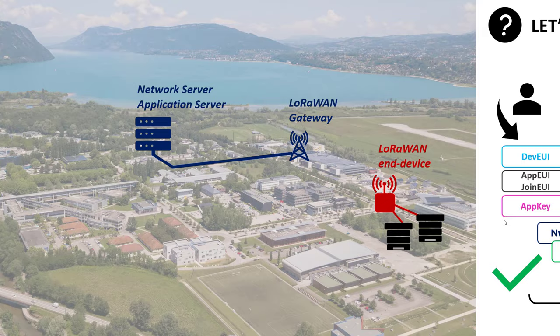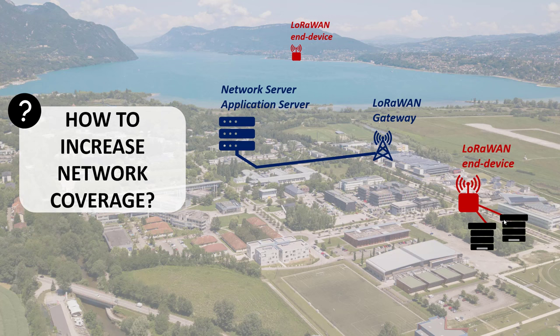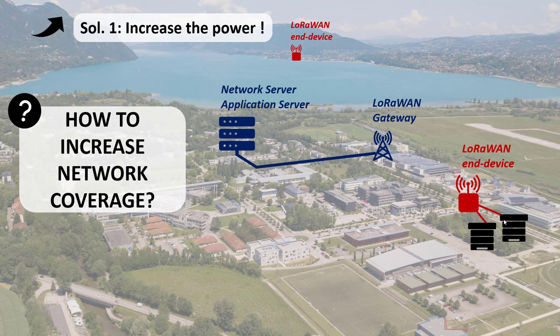Back on campus, we can transmit data from our device up to the server. Now we want to increase network coverage. I have a new device on the other side of the lake — about 10 kilometers from campus — and I want to reach it. The first idea is to increase transmit power, but European regulation on the 868 MHz band limits it to 14 dBm, and increasing power also reduces battery life.